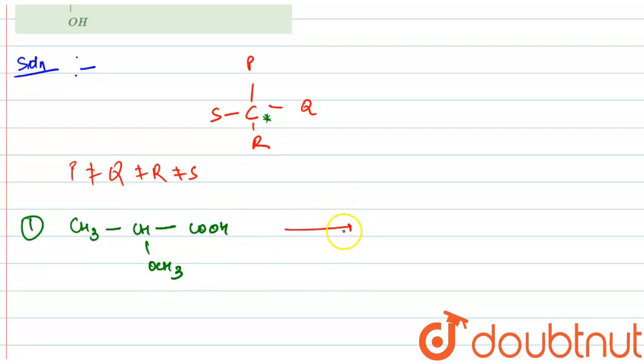On reacting it with LiAlH4, lithium aluminum hydride, it will give CH3-CH2-CH-OCH3-CH2OH.